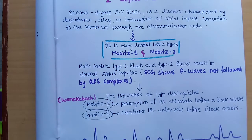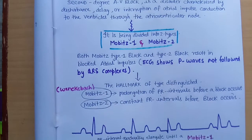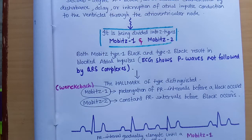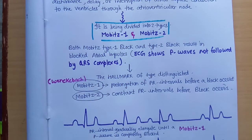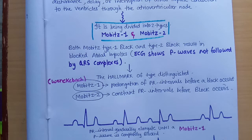On the ECG, the P waves are not being followed by the QRS complex. Here is the hallmark to distinguish between type 1 and type 2. In Wenckebach, or Mobitz type 1, we find a prolongation of PR interval before the block occurs — before each QRS complex the PR interval is getting progressively prolonged, and suddenly the QRS complex disappears. We don't know after how many QRS complexes the disappearance will occur.